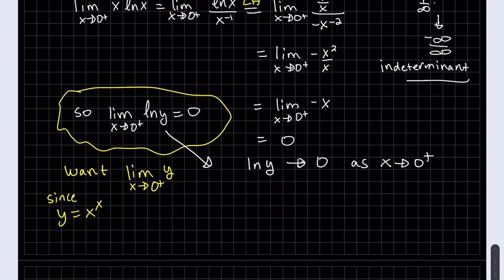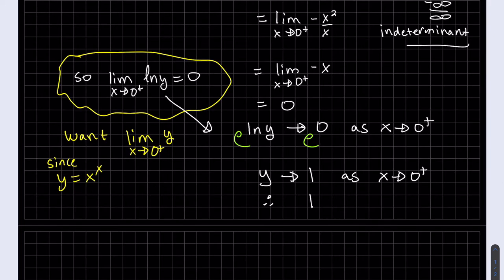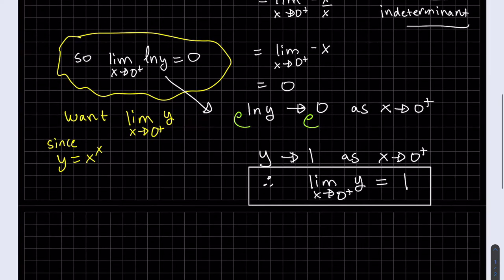This is just saying the natural log of y is approaching zero as x approaches zero to the right. That's what a limit means. So if I do this, we get y approaching one as x approaches zero to the right. This is just the definition of the limit. We proved it, because y is x to the x. Here's our final answer.